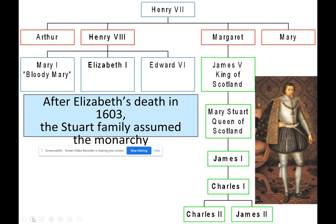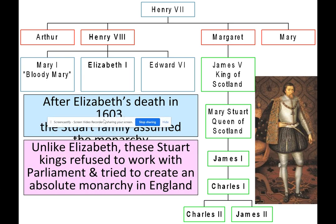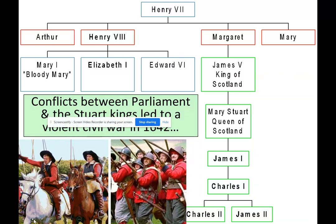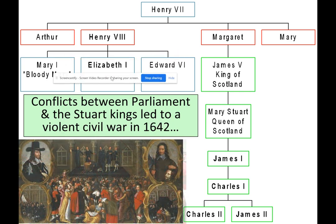After Elizabeth's death in 1603, the Stuart family assumed the monarchy. Unlike Elizabeth, Stuart Kings refused to work with Parliament and tried to recreate an absolute monarchy in England. This was problematic because England functioned with a limited monarchy where Parliament had a say. The resulting conflict led to a series of violent civil wars in 1642.